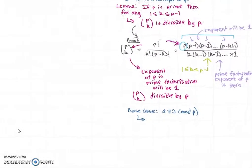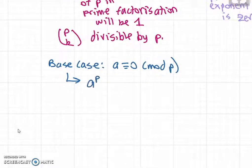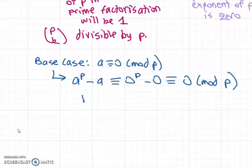The base case of the induction is when a is congruent to 0 mod p. In this case, a^p minus a is congruent to 0^p minus 0, which is congruent to 0 mod p. This means p divides a^p minus a. So this proves the base case.